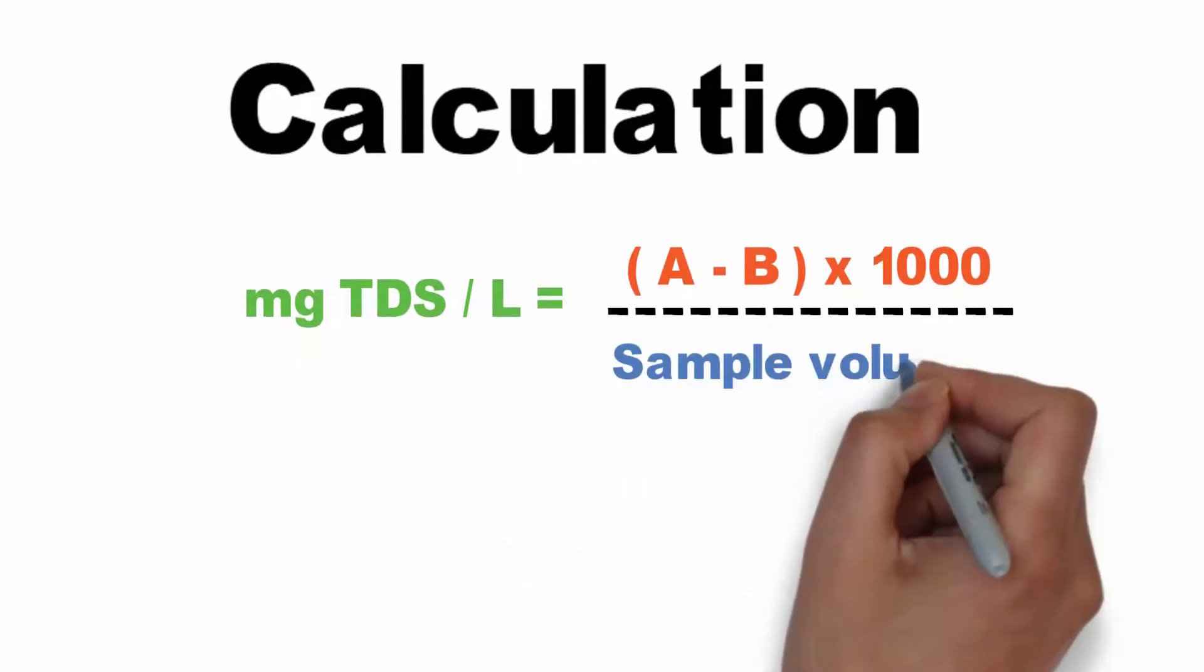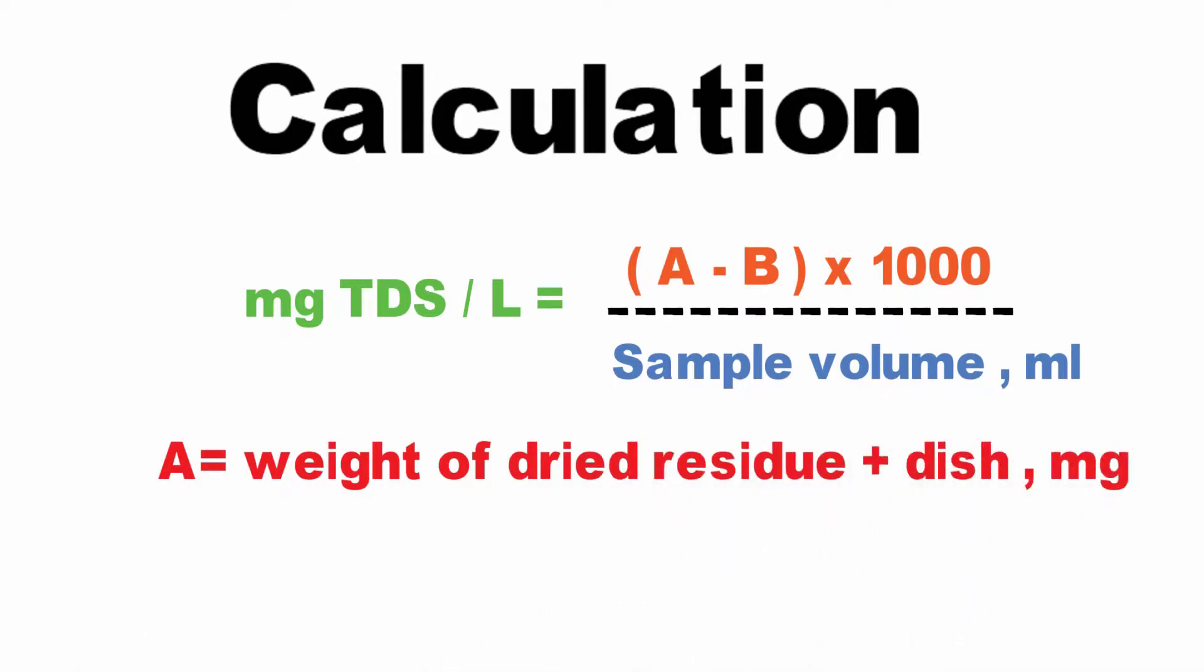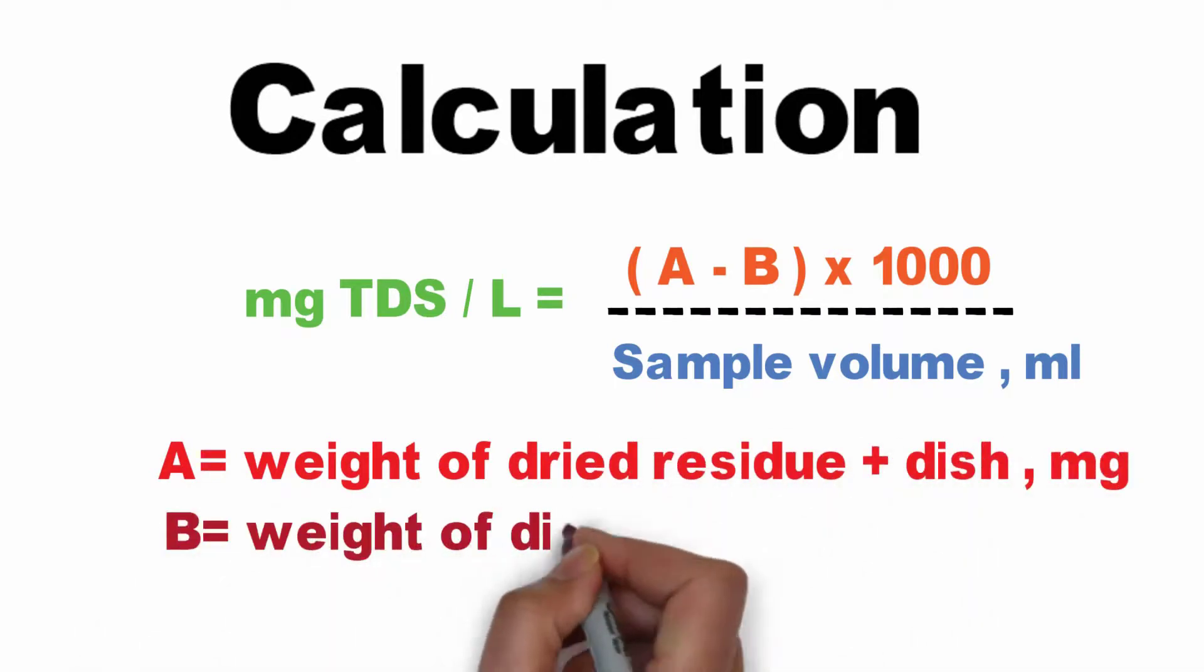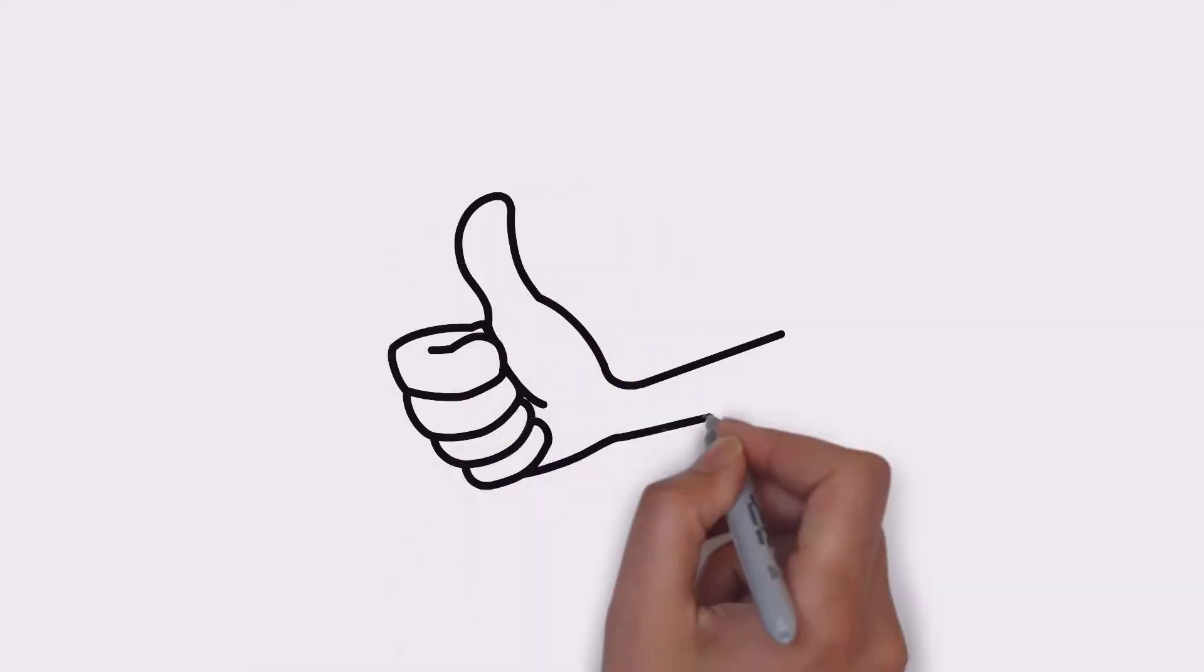A is the weight of the dried residue plus the dish in milligrams. B is the weight of the dish alone in milligrams. TDS is the total dissolved solid.